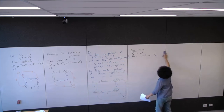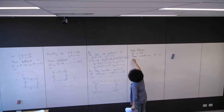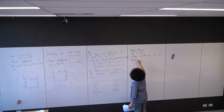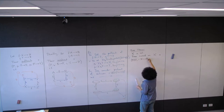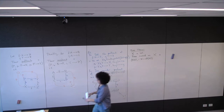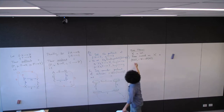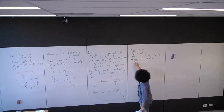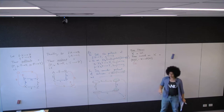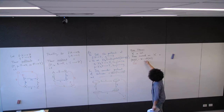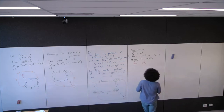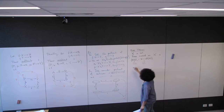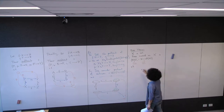The free monoid on X, which we denote F(X), is a pair: F(X) together with a map ι from X to F(X), where F(X) is a monoid (an object in the category of monoids) and ι is a map of sets.